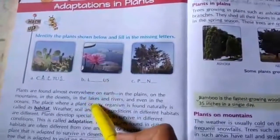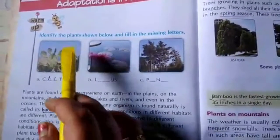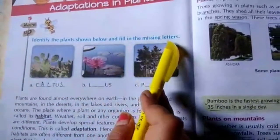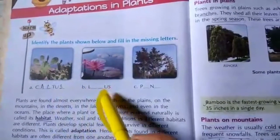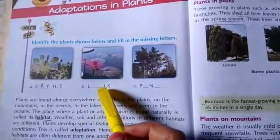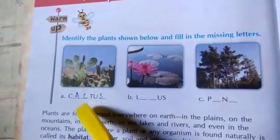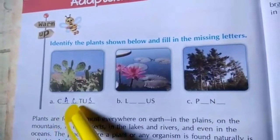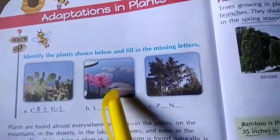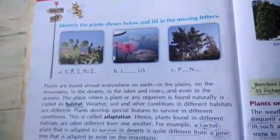Before we start with the lesson, first fill up this puzzle. You will have to identify the plants shown below and fill in the missing letters. Hints are given — a few alphabets are already provided and in the blanks you have to fill them up. I have filled the first one: the first plant is Cactus — C-A-C-T-U-S. Similarly, you will have to do for the rest. See the picture, identify it, and write it down.